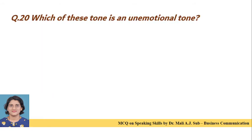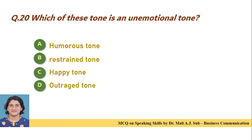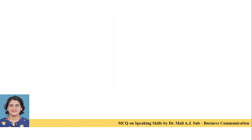Question 20: Which of these tones is an unemotional tone? Option A: humorous tone. Option B: restraint tone. Option C: happy tone. Option D: outrage tone. Correct answer is Option B — restraint tone is an unemotional tone.